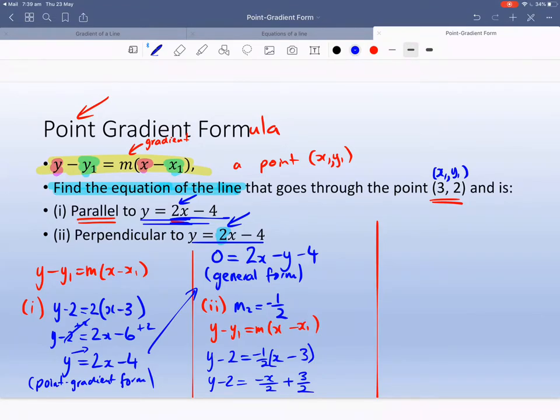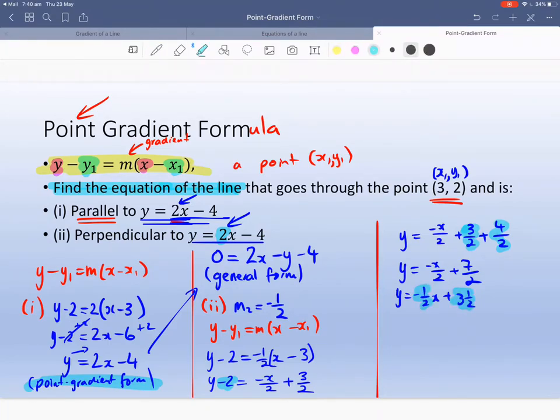Here's a situation where in general form it will be a problem, but let's put it in point gradient form first. Y equals minus X on 2 plus 3 on 2 plus, I'm going to do this, 4 on 2. So I've changed this 2 to 4 on 2 so I can play with this. So minus X on 2, that's going to be plus 7 on 2. We can easily see that this is in point gradient form.